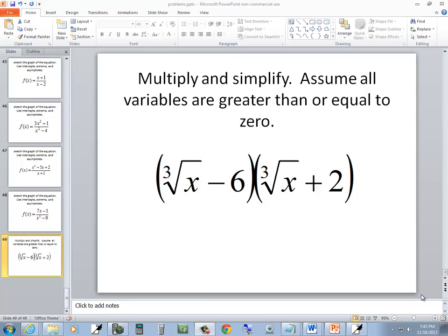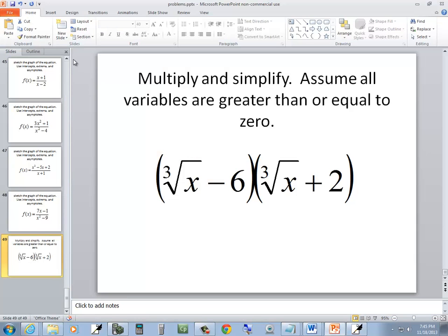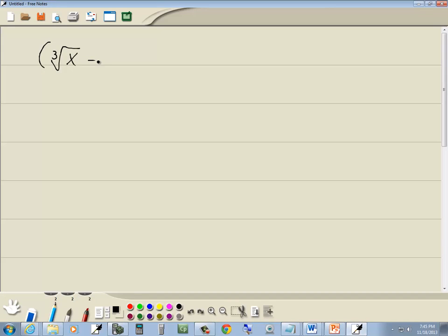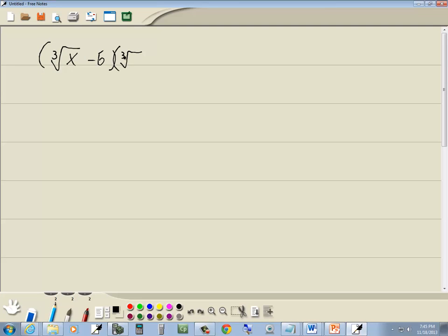Let's take a look at this problem. We got the cube root of x minus 6 times the cube root of x plus 2. And we want to multiply these together.